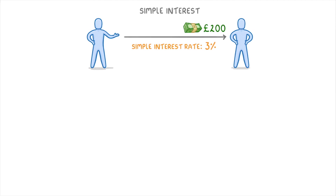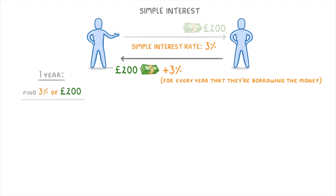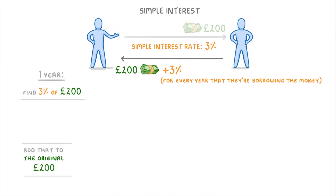What does that actually mean? Well, it means that at some point, that person will have to pay you back the original £200 that they borrowed, plus an extra 3% for every year that they're borrowing the money. So to find out how much they'd owe you after just one year, we're going to need to find 3% of £200, which would be the interest, and add that to the original £200.